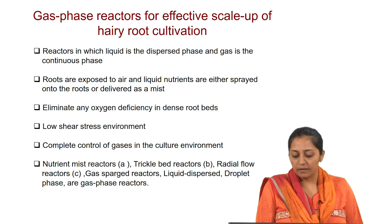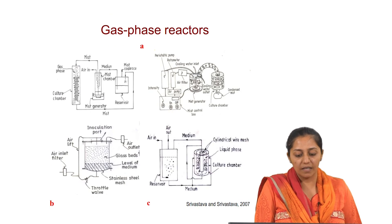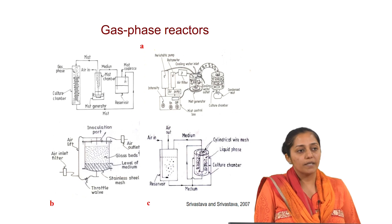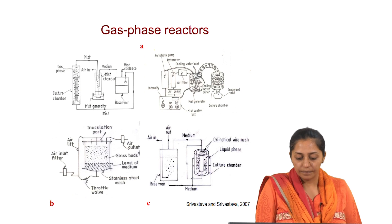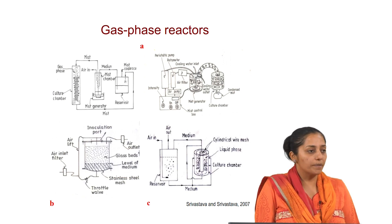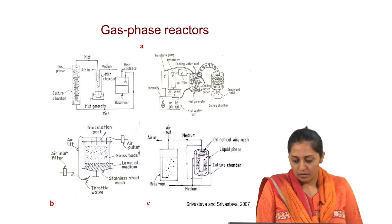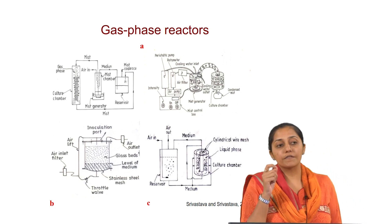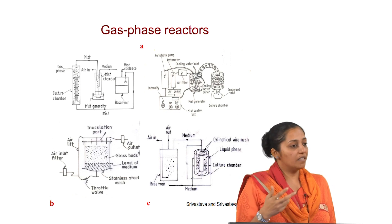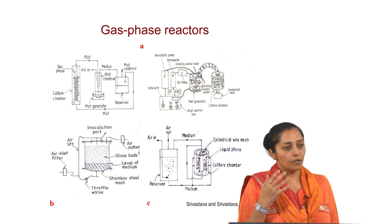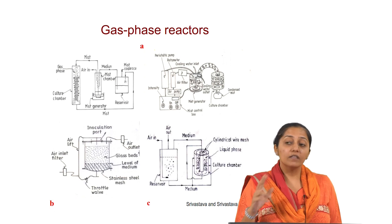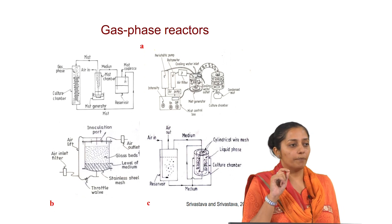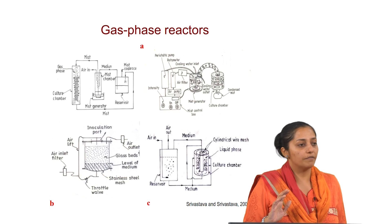Gas phase reactor types include nutrient mist reactors, trickle bed reactors, radial flow reactors, and gas phase reactors. In the mist chamber design, ultrasonic transducers can be used to create mist, which then goes to the culture chamber where roots are inoculated, and condensate can be recycled back to the reservoir. The kind of support material also matters — glass beads, polypropylene basket, polyurethane foam, and stainless steel mesh were all tested as supports, and all gave different results. The kind of material used as a support can be a critical factor for results.